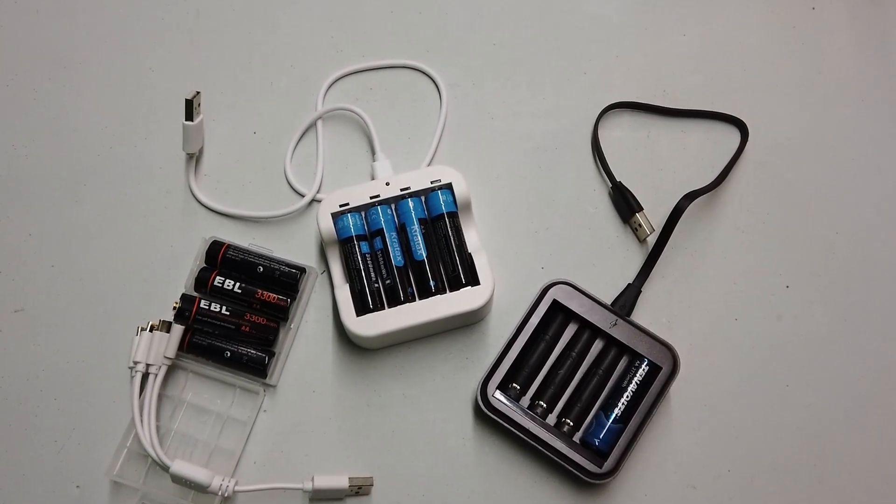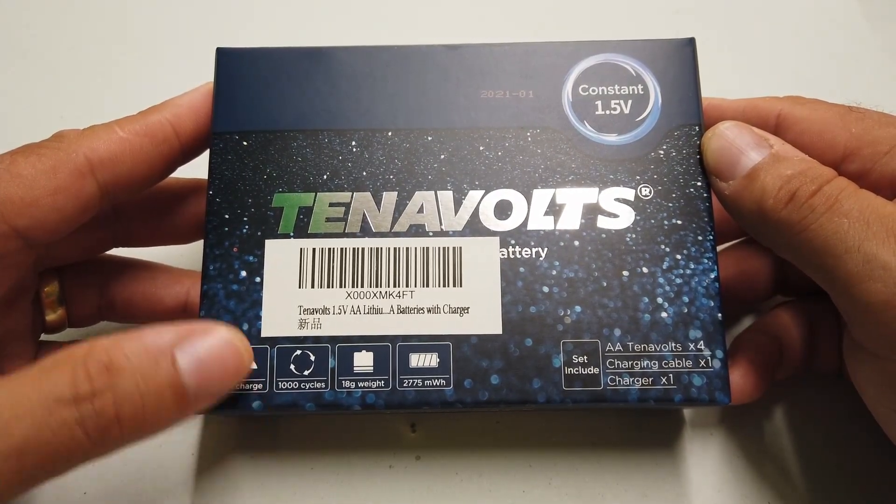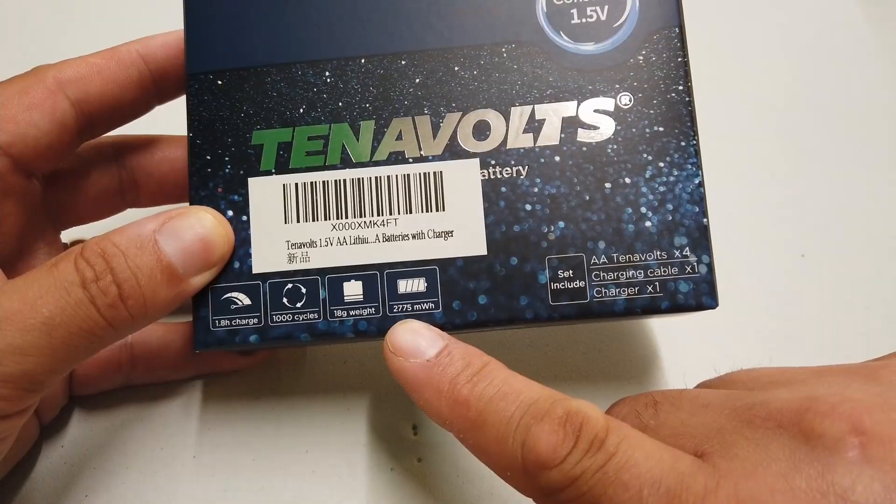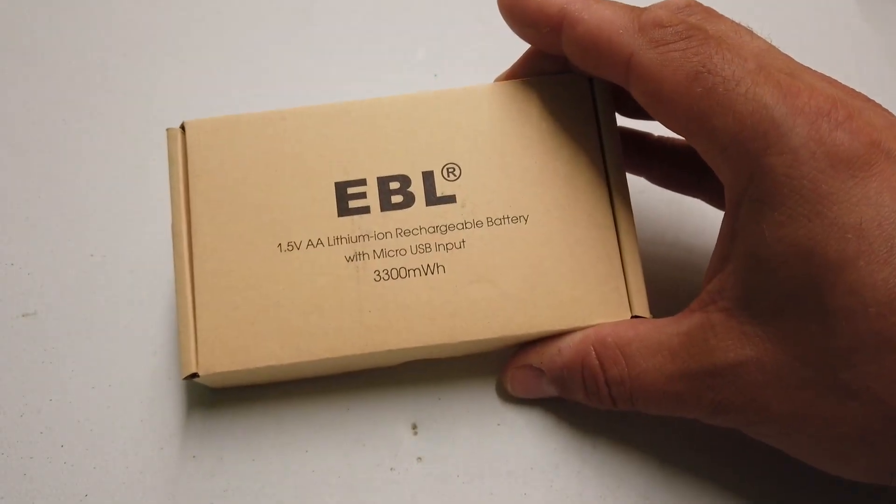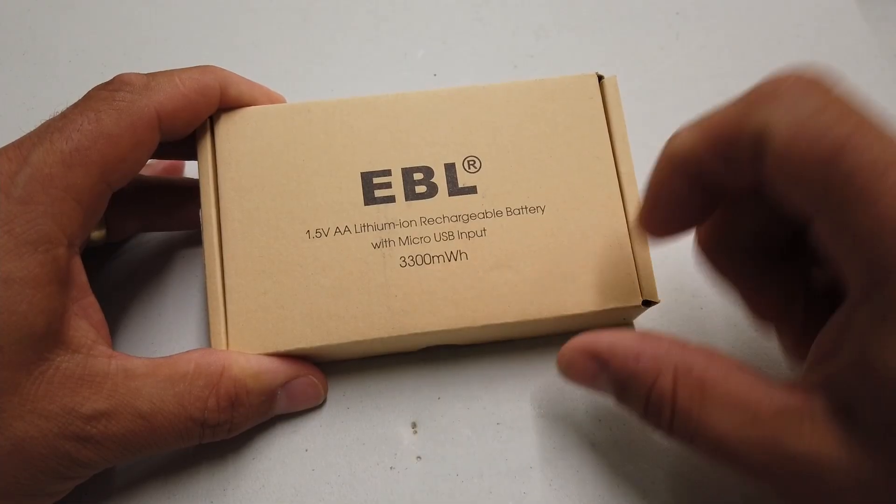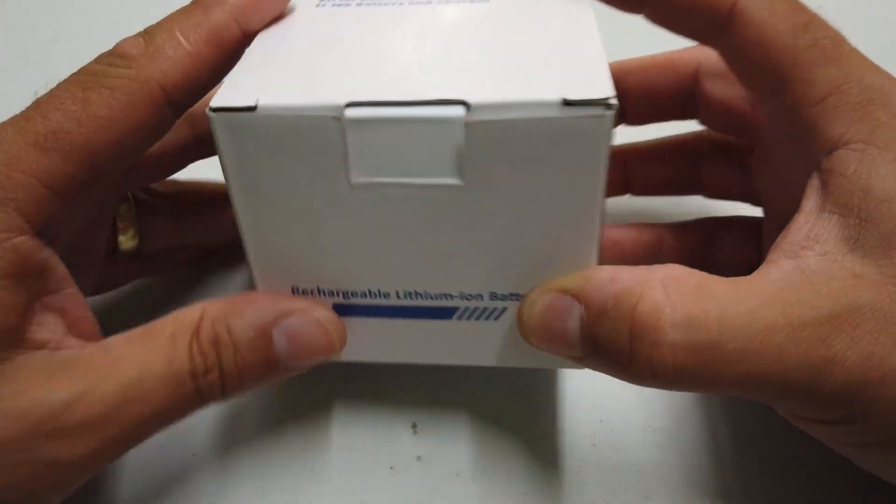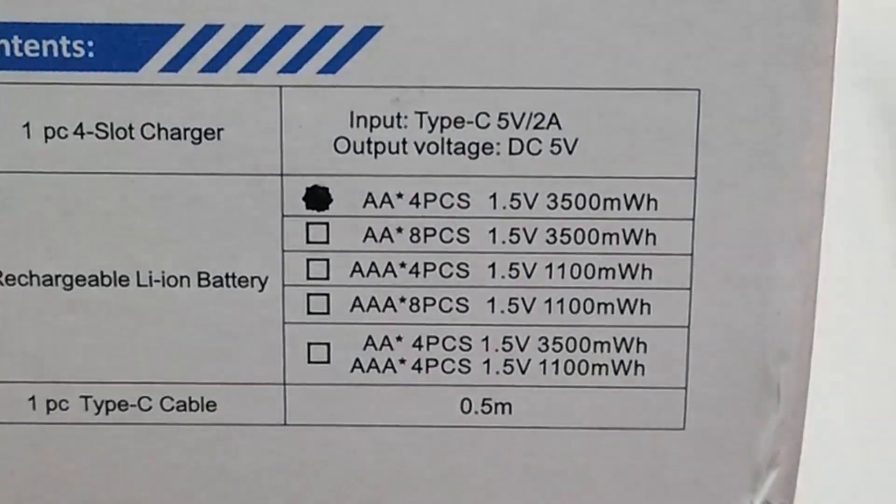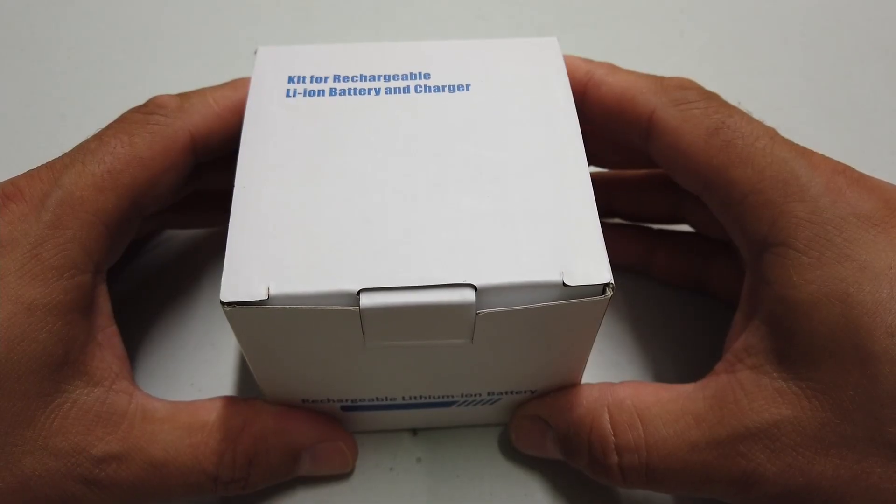We have three different brands of these AA lithium cells to look at. Tenovolts, which claim to have 2775 milliwatts worth of power. EBL, which claim to have 3300 milliwatt hours of power. And Kratax, which claim to have 3500 milliamps worth of power. Let's get these boxes open and have a play with some of these AA cells.